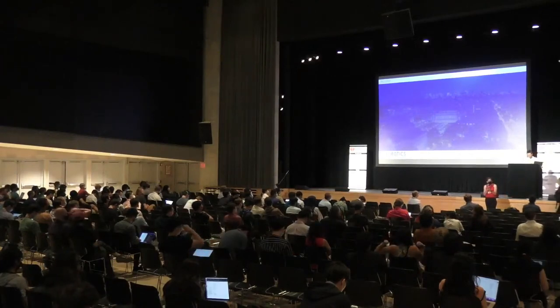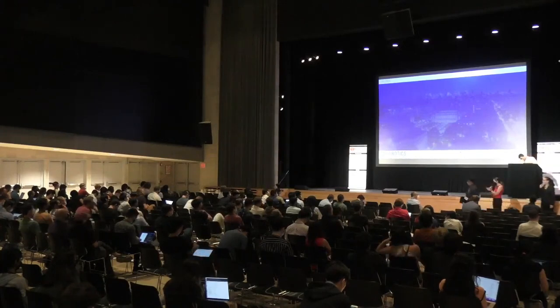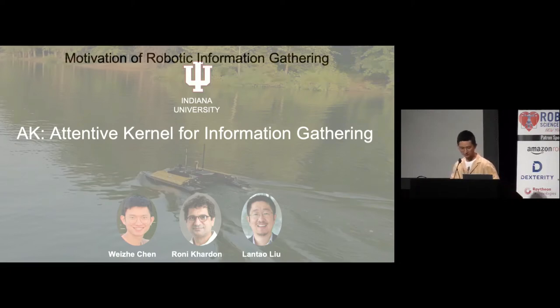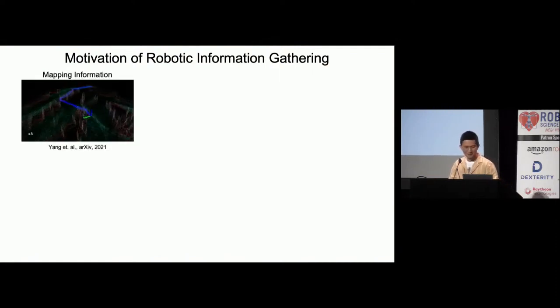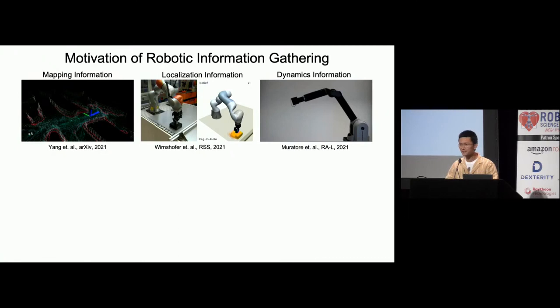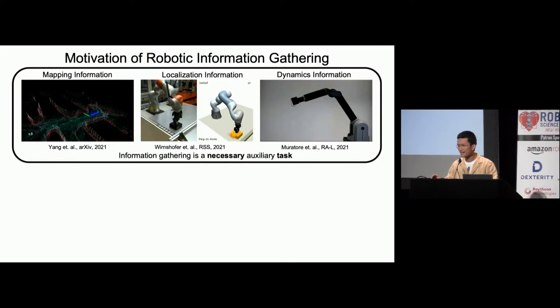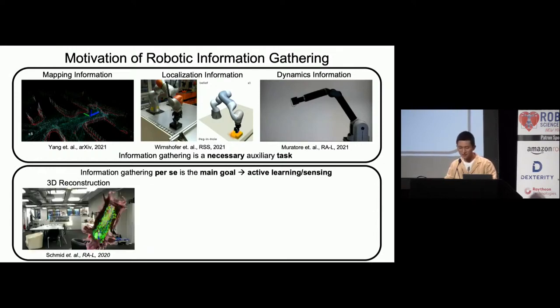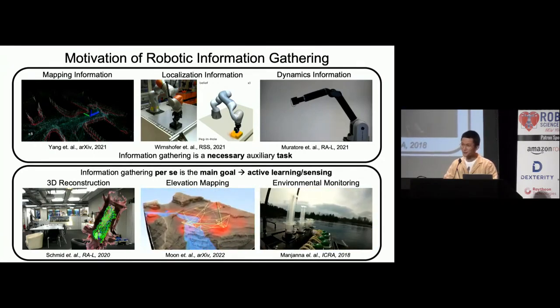Our final speaker of this session is Weiju Chen, who will be presenting a paper titled 'AK: Attentive Kernel for Information Gathering.' Thanks for the introduction — hi, my name is Weiju Chen. We present AK: Attentive Kernel for Information Gathering, a joint work with Ronnie Carlton and Lantao.